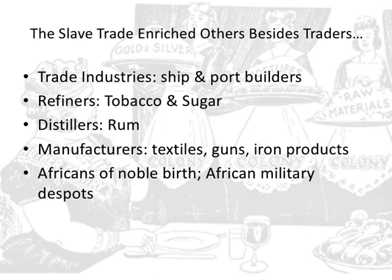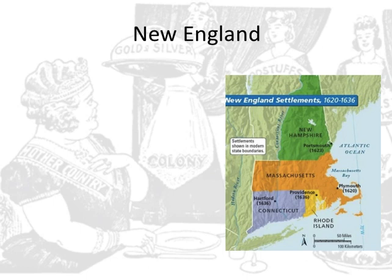On that note, let's turn to look at our different colonial regions. We're going to go geographically and start in New England. The New England colonies include New Hampshire, Massachusetts, Connecticut, and Rhode Island. We're going to go through various aspects of each colonial region, starting with their mission.